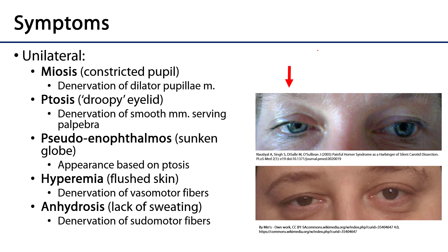So let's take a look at the symptomology. With Horner's we have several potential symptoms — they aren't all necessarily present, as it depends on the order of Horner's — but Horner's is generally characterized as unilateral, meaning on one side.